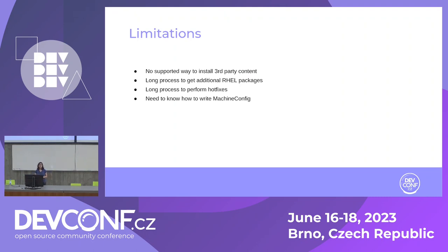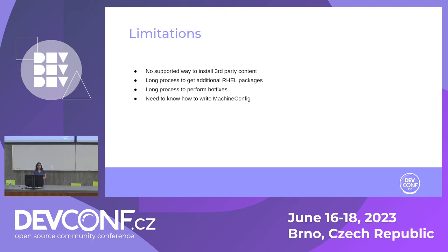The next limitation is additional RHEL packages. RHEL has a lot of packages, but not everything is part of your core operating system. For example, USBguard or LibreSwan — they're not part of your base OS. If you want them on the node, the idea is to containerize things, but not everything can be containerized. Getting an additional package into RHEL is a long process — every additional package increases the size of the OS, so we have to be mindful, test it, support it. It has to be a very reasonable use case to justify that.